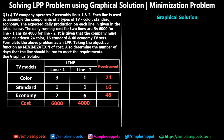So a TV company operates two assembly lines — line 1 and line 2. Each line is used to assemble three types of TVs: color TV, standard TV, and economy TV. The expected daily production on each line is given in a table. The daily running cost of the two lines is rupees 6,000 for line 1 and rupees 4,000 for line 2 — meaning every day 6,000 and 4,000 rupees is spent to keep these lines running.